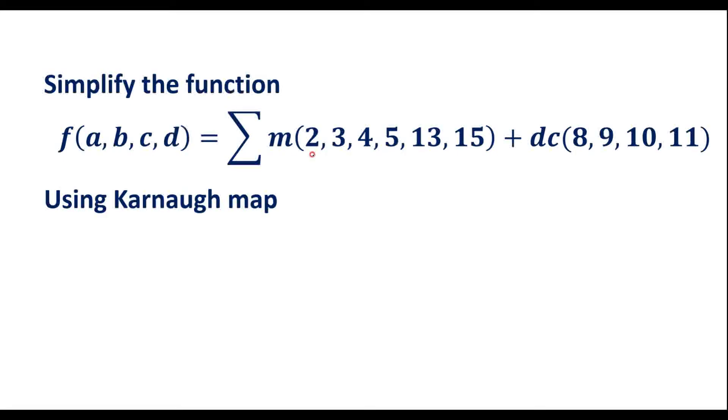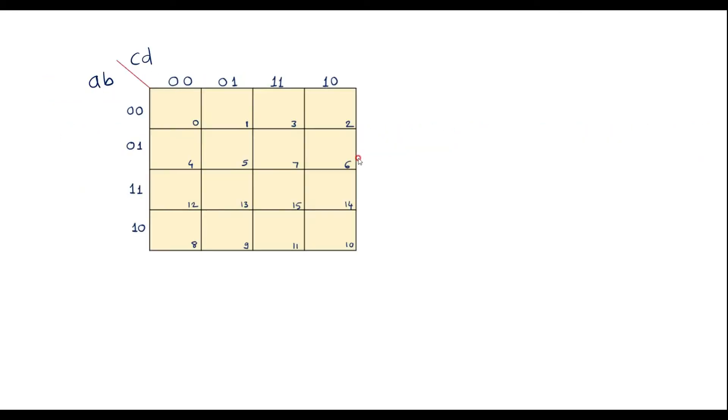The minterms are 2, 3, 4, 5, 13, 15. In these cell numbers, we have to write 1. That is 2, 3, 4, 5, 13, 15.